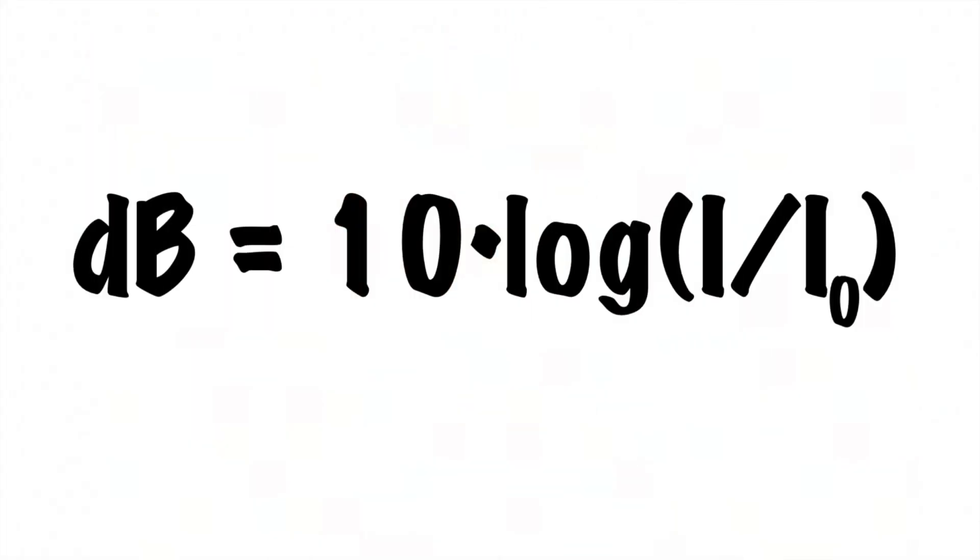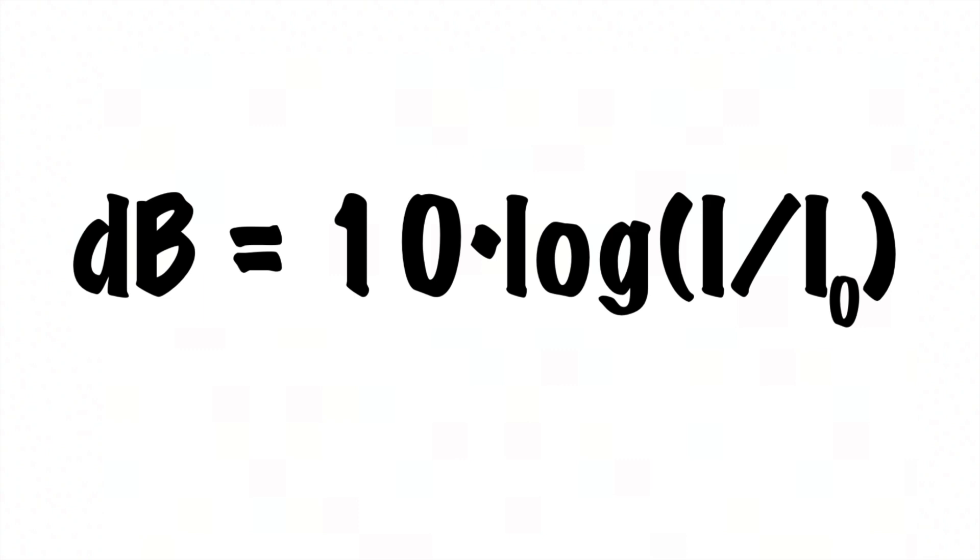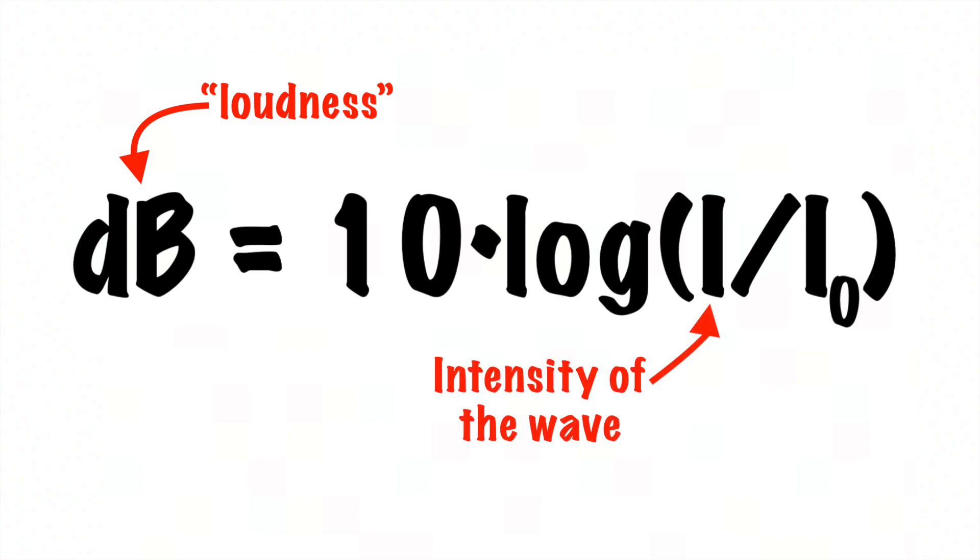Next, we're going to want to take a look at this equation right here. All that this is saying is that the decibels, which is what we use to measure loudness, is equal to 10 times the logarithm of the intensity of your sound wave divided by this constant I_0, which is 10 to the minus 12 watts per square meter.